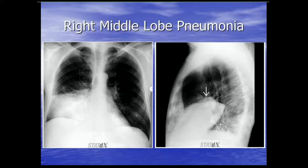This is a nice case of lobar pneumonia. There's significant airspace opacity in the right lung base. On the lateral, you can clearly tell it's in the right middle lobe. There's some bulging of the pleural fissures, and this ended up being a Klebsiella pneumonia.